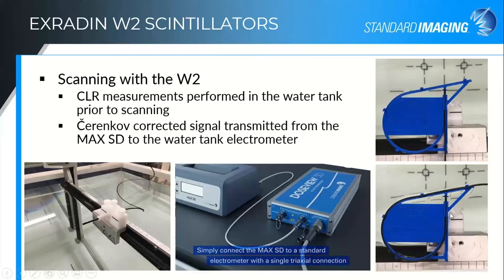We provide a jig that can be used for the CLR measurements in the water tank as well. This shows both the minimum fiber and maximum fiber configurations looking down at the water tank. You can also use a rectangular field method with it set up in the scanning position, as described in the user manual.